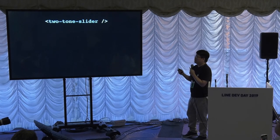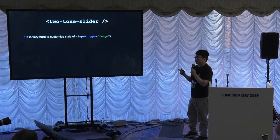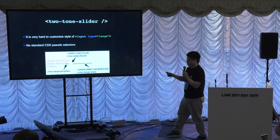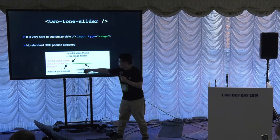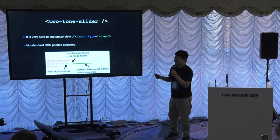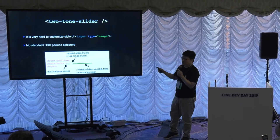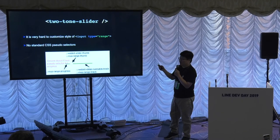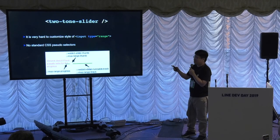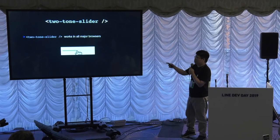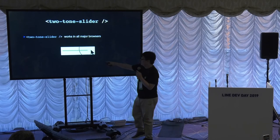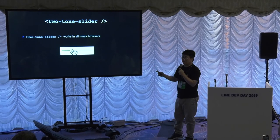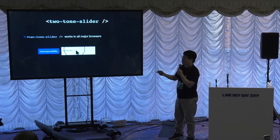The next one is the two-tone slider. If you've ever tried to customize a range-type input, you know it's very difficult because there are no CSS pseudo-selectors for the progress part on Chrome, making it impossible to create a beautiful slider with a progress bar. So we decided to re-implement this as a custom element called the two-tone slider. As you can see, the progress bar has a different color from the track bar, and it works on Chrome, Firefox, Safari — any browser — bringing us interoperability.